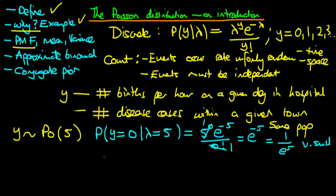To calculate the probability of an arbitrary number of disease cases, all we need to do is plug that particular value of y into our formula, and that gives us the result.